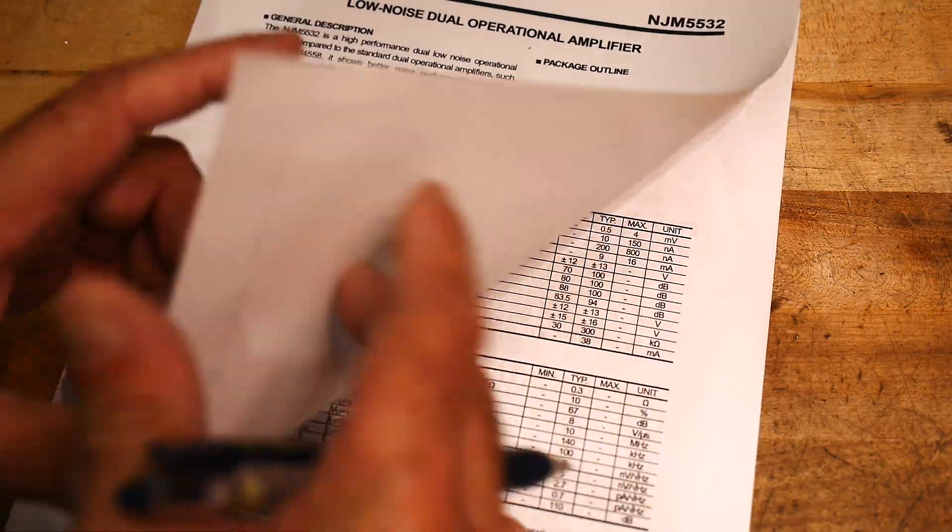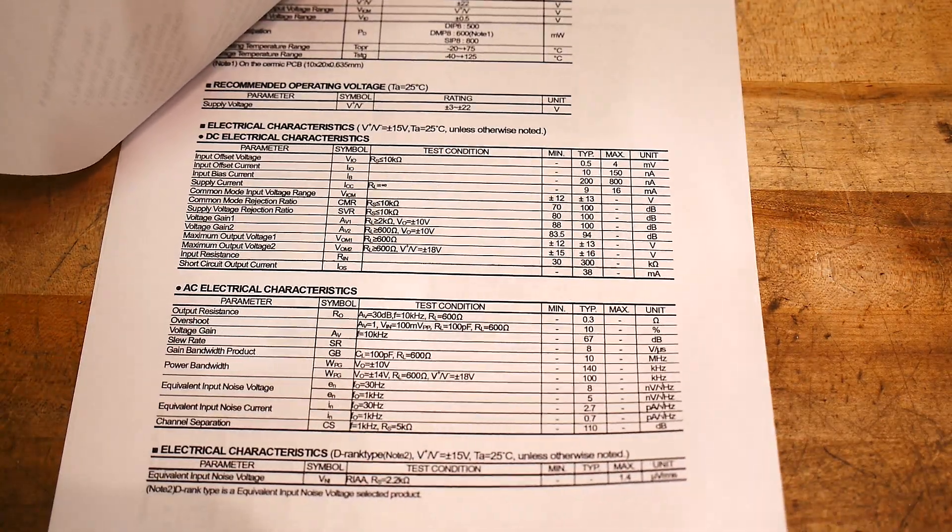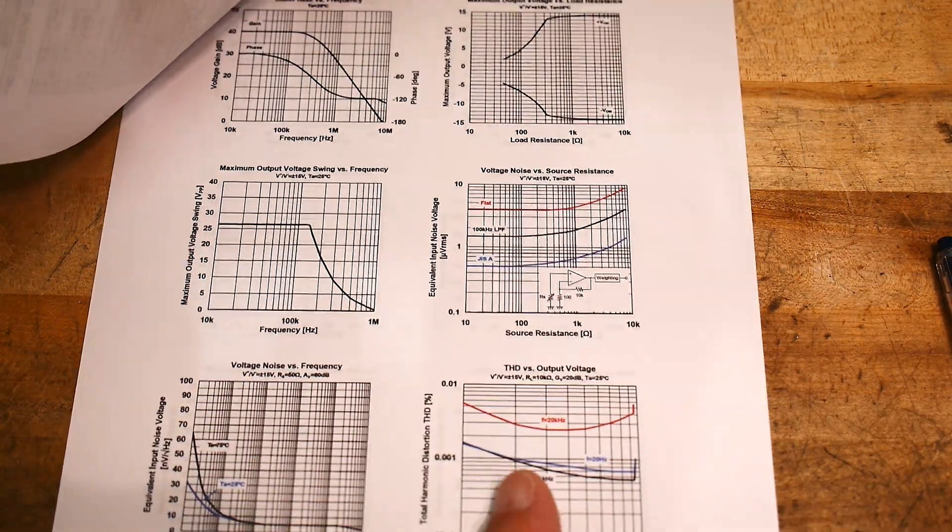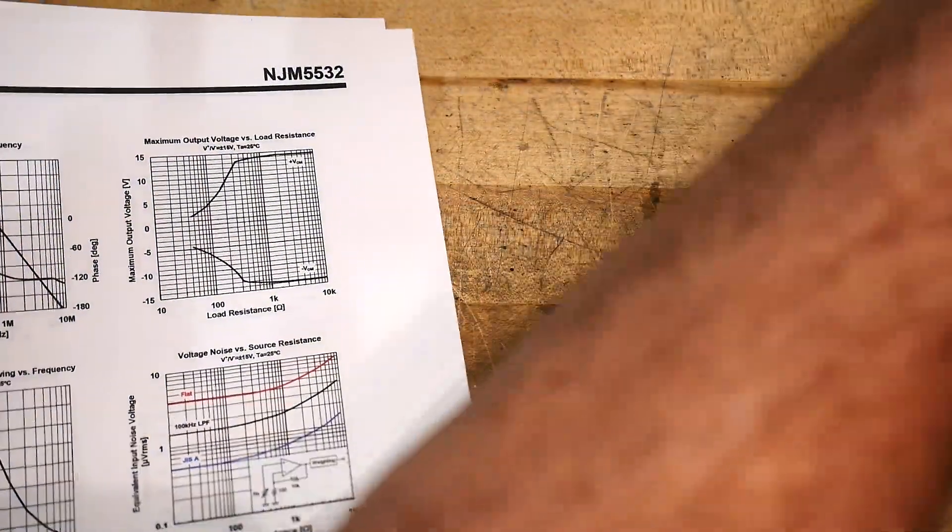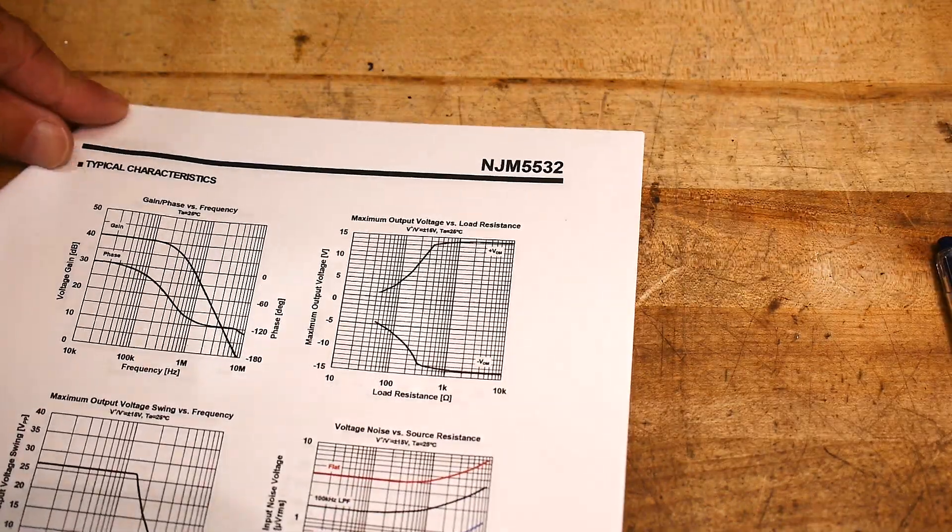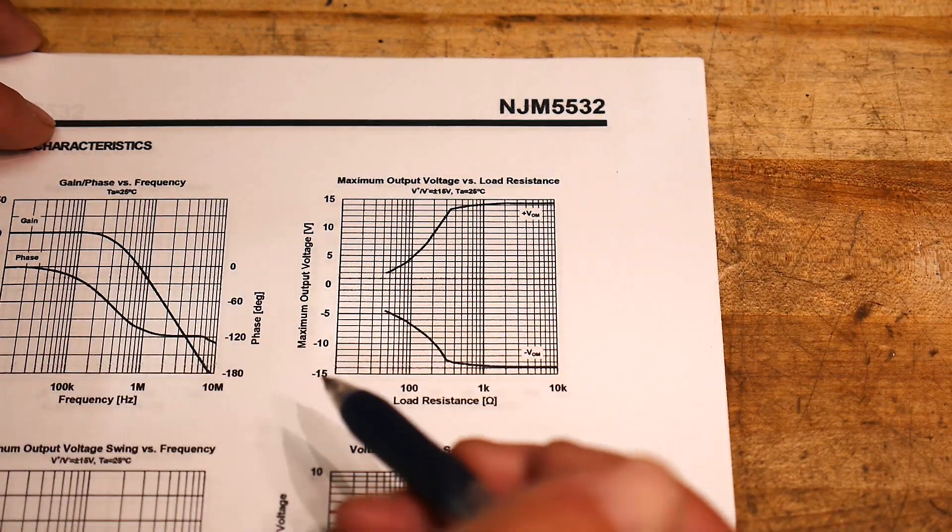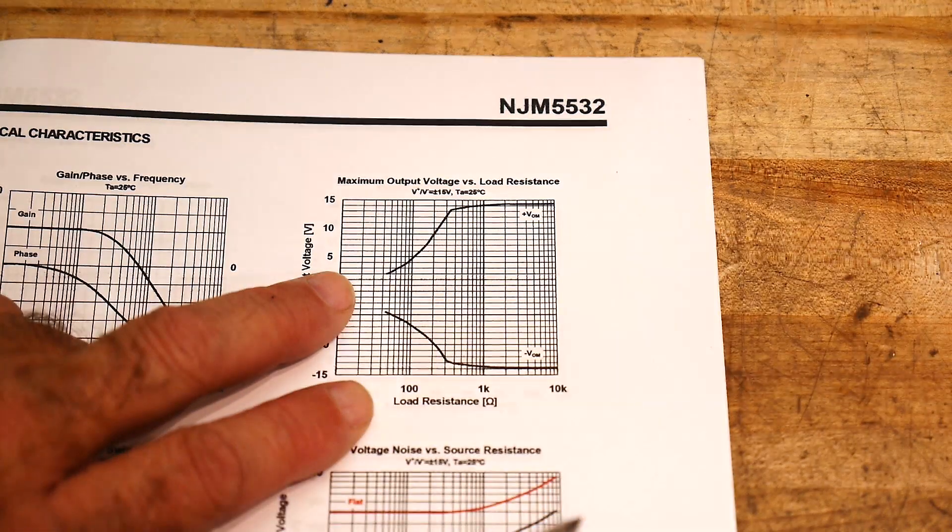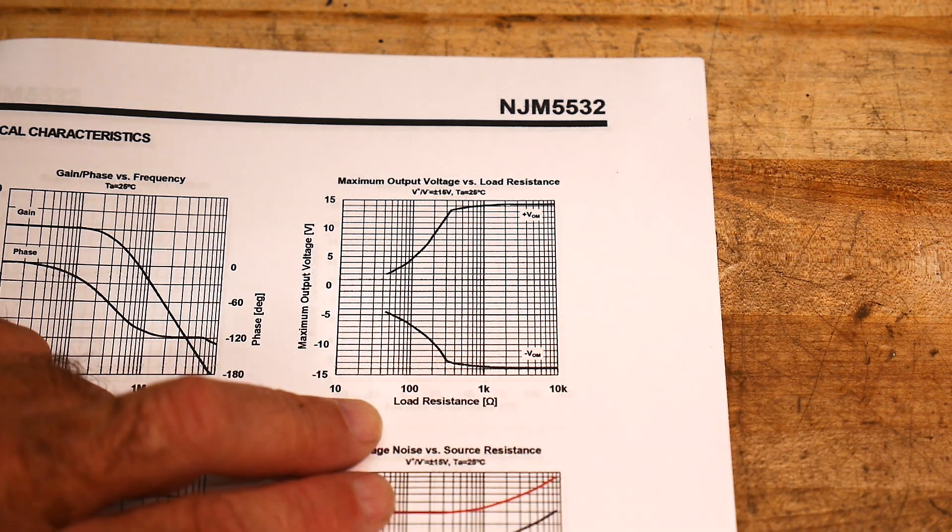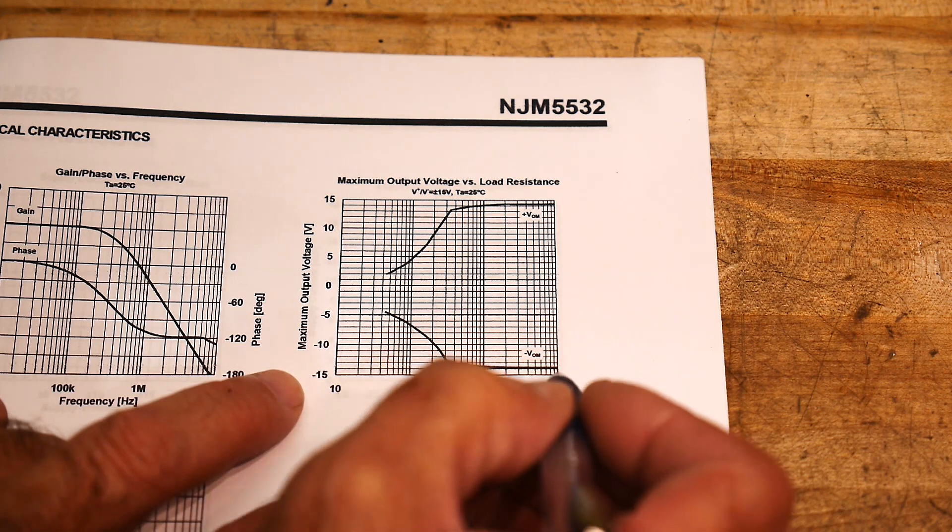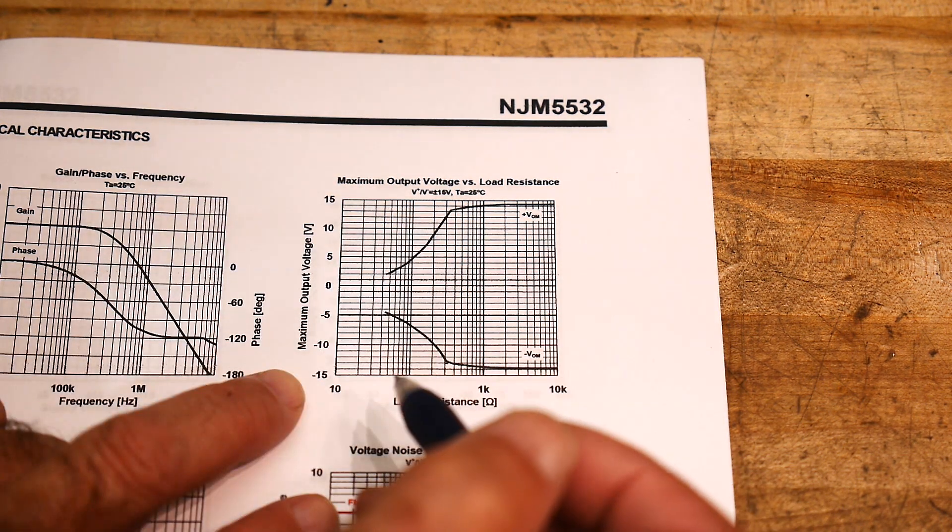So I said, okay, what's the drive capability of these? I looked for output current on these and guess what, I couldn't find any. But I did find a graph. So a lot of times you have to go to the graph. This is the graph that we would be interested in. This is maximum output voltage versus load resistance. So the same spec that the TL072 gave us in numbers, they're giving it in a graph. And so you can see here that at 10k load resistance, it swings full. And then it does pretty well up to about this point and then it starts falling off.